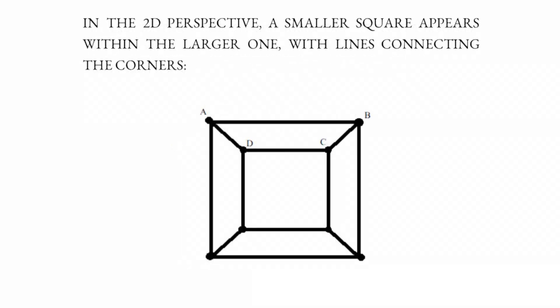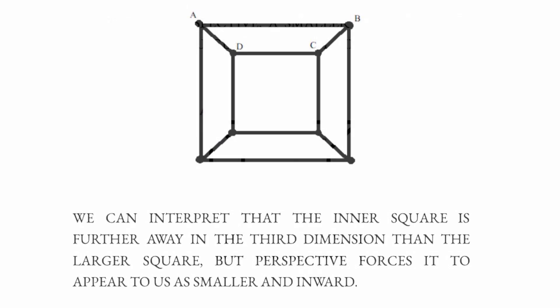In the two dimensional perspective, a smaller square appears within the larger one, with lines connecting the corners. We can interpret that the inner square is further away in the third dimension than the larger square, but perspective forces it to appear to us as smaller and inward.